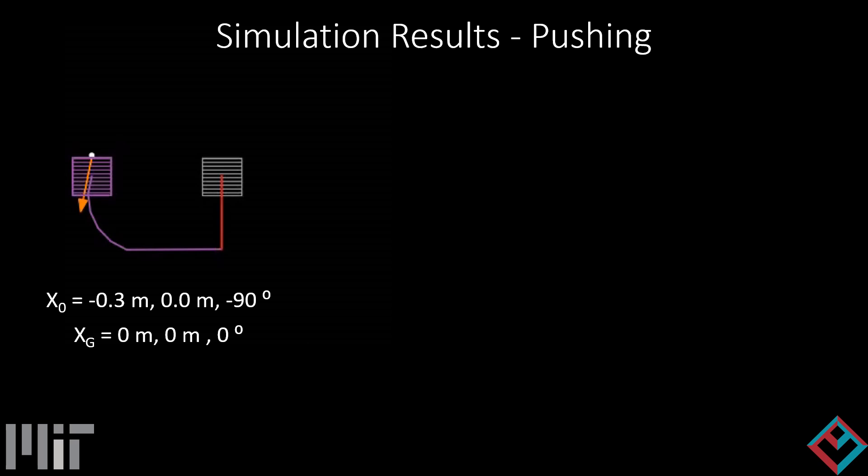Here we present simulation studies for planar pushing. The goal, shown in gray, is always the origin. The initial condition, shown in purple, is varied. Our algorithm plans a hybrid trajectory and generates a control law to execute the planned motion.